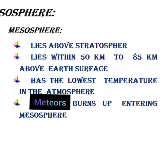The next layer is the mesosphere. The mesosphere lies above the stratosphere. It starts at 50 kilometers above the Earth's surface and goes up to 85 kilometers high. In this layer, the temperature decreases with altitude.